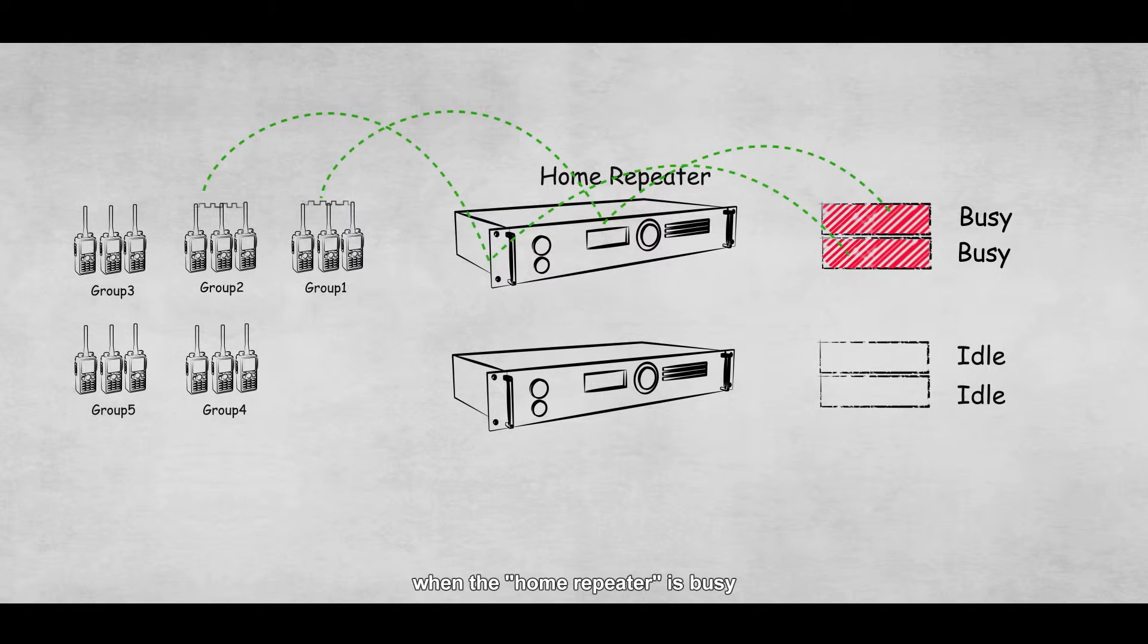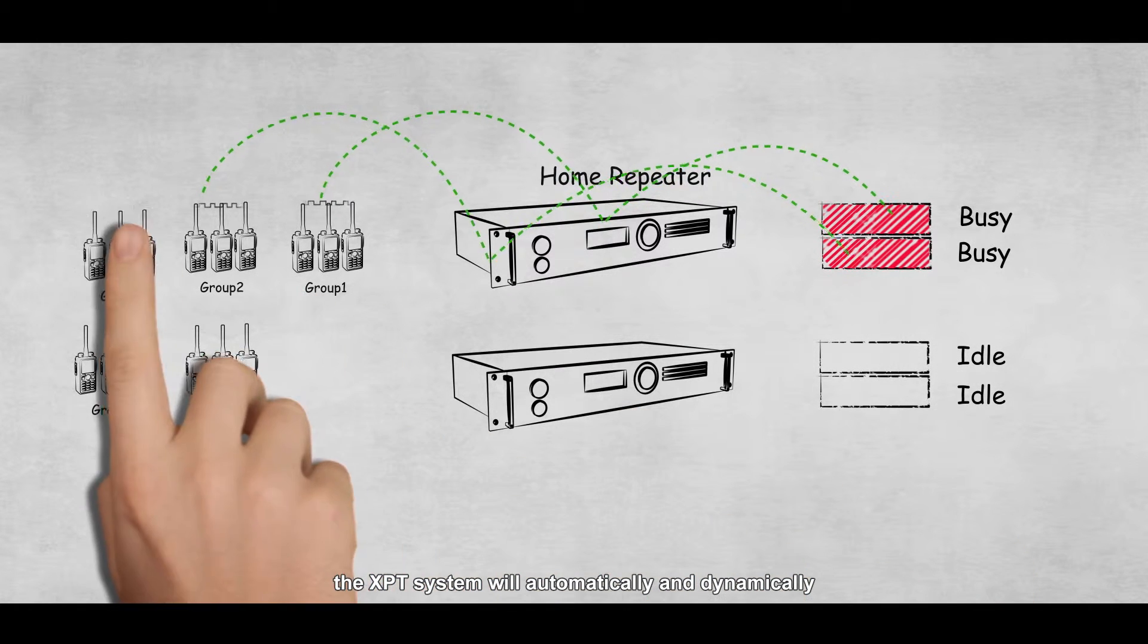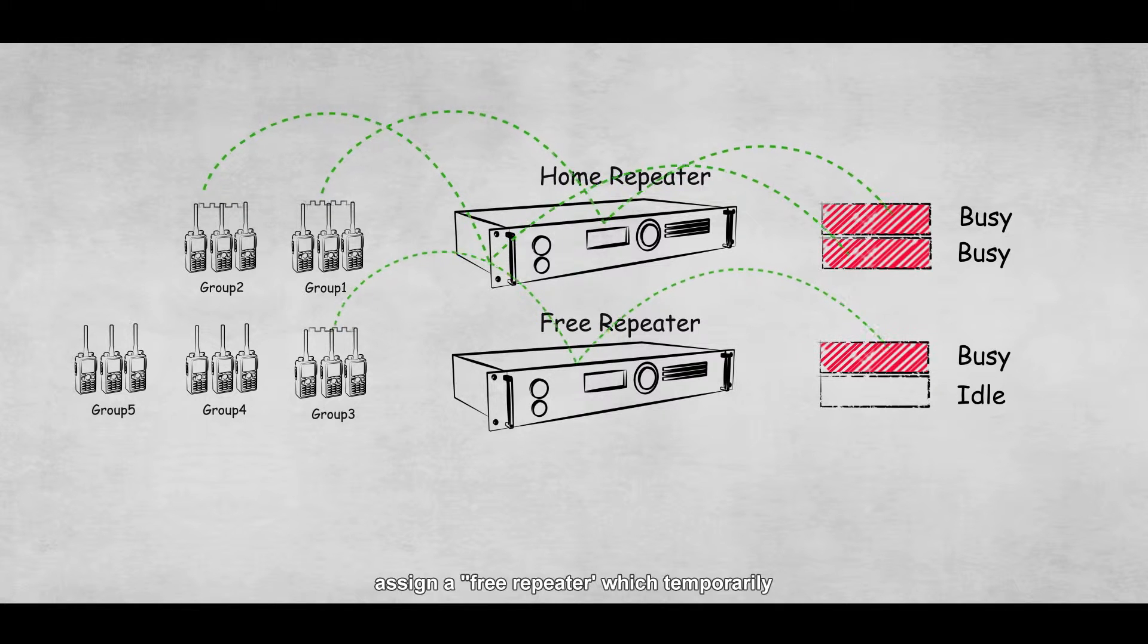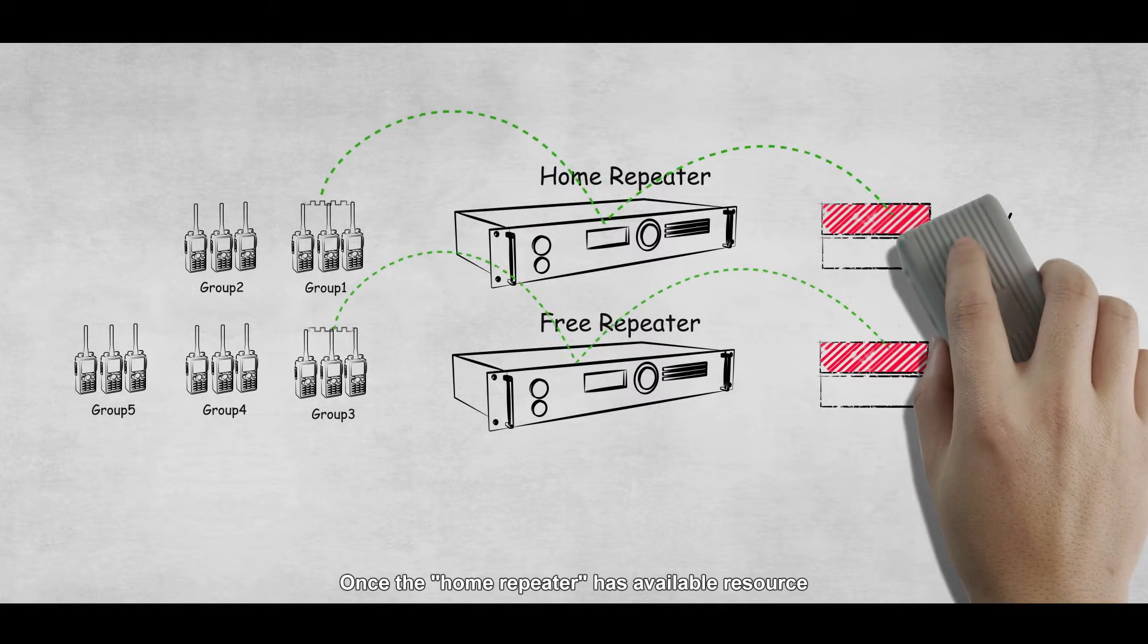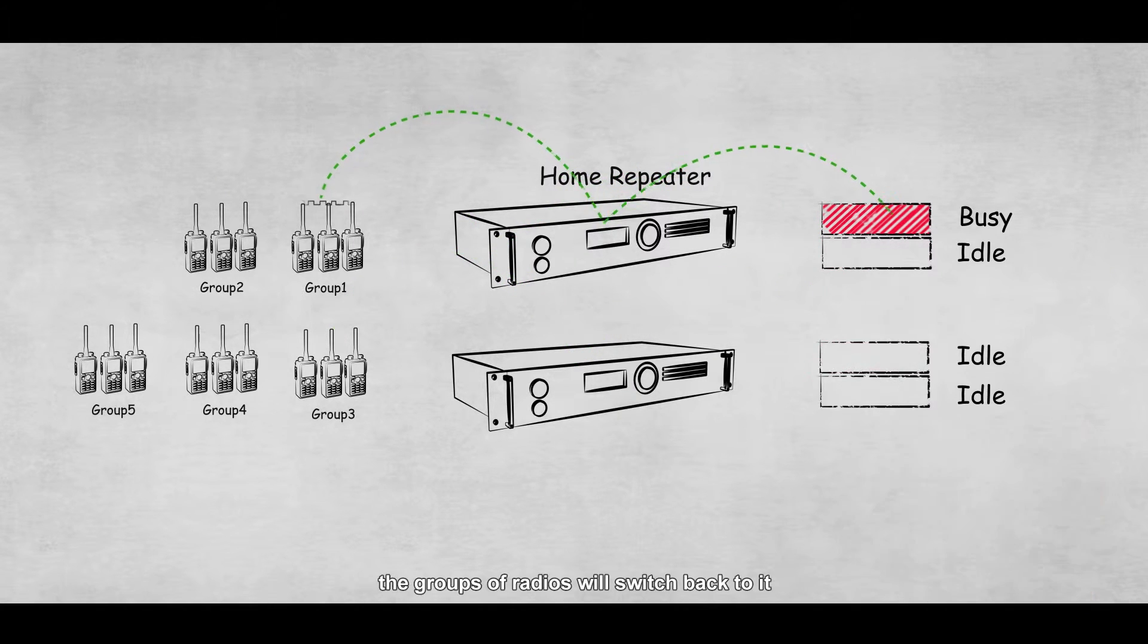Now, when the home repeater is busy, the XPT system will automatically and dynamically assign a free repeater, which temporarily provides available channels to initiate the call. Once the home repeater has available resource, the groups of radios will switch back to it.